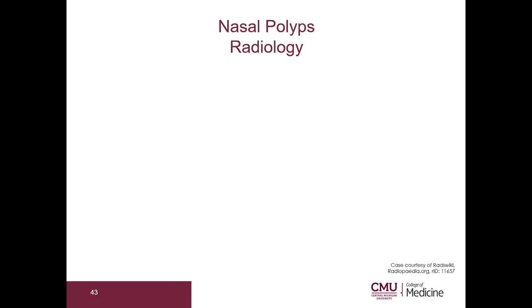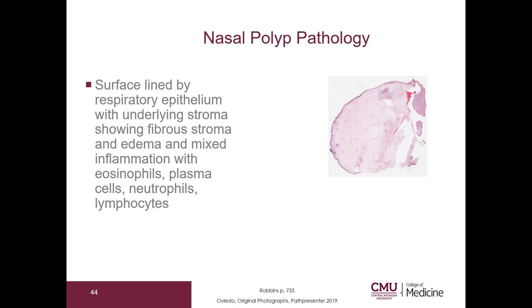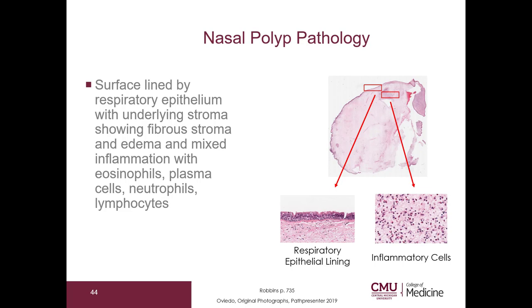Let's take a look at the radiology. Here is our axial CT scan showing the nose, nasal septum, and maxillary sinus — and here of course is the nasal polyp. On pathology, the surface of the polyp is lined by respiratory epithelium, and the underlying stroma has a fibrous stroma with edema and mixed inflammation. You can see the respiratory lining right here, and here are the inflammatory cells.